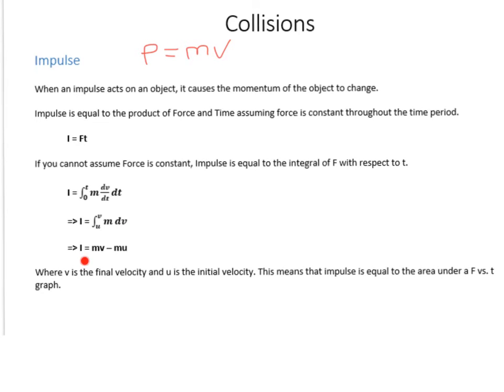And when you do that, what you'll see is that the impulse ends up being the change in momentum, so the final momentum minus the initial momentum. That's where it comes from.